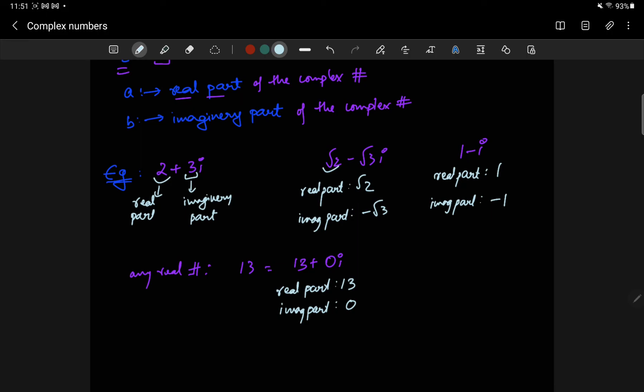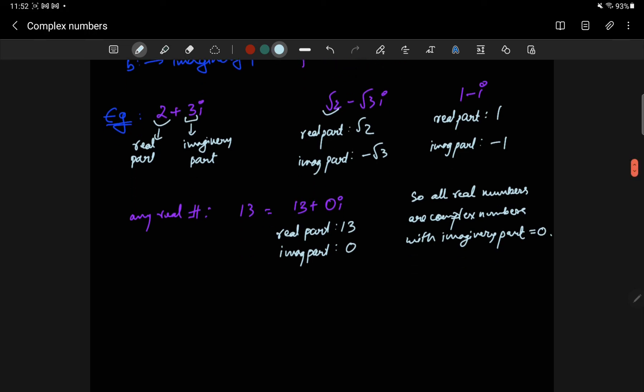So all real numbers are complex numbers with imaginary part equal to 0.